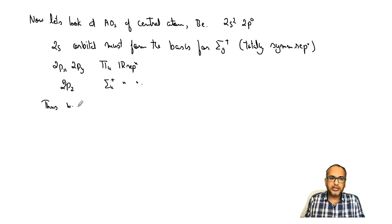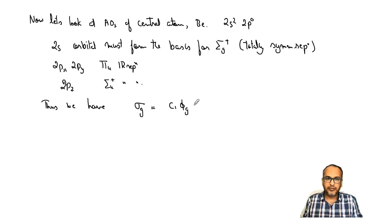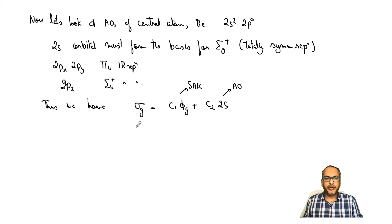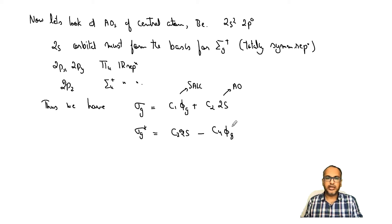We can write σg = C₁·φg + C₂·2s, where φg is the SALC from the two hydrogens and 2s is the atomic orbital. Similarly, σg* = C₃·2s − C₄·φg. The addition gives the bonding combination and the subtraction gives the anti-bonding combination.